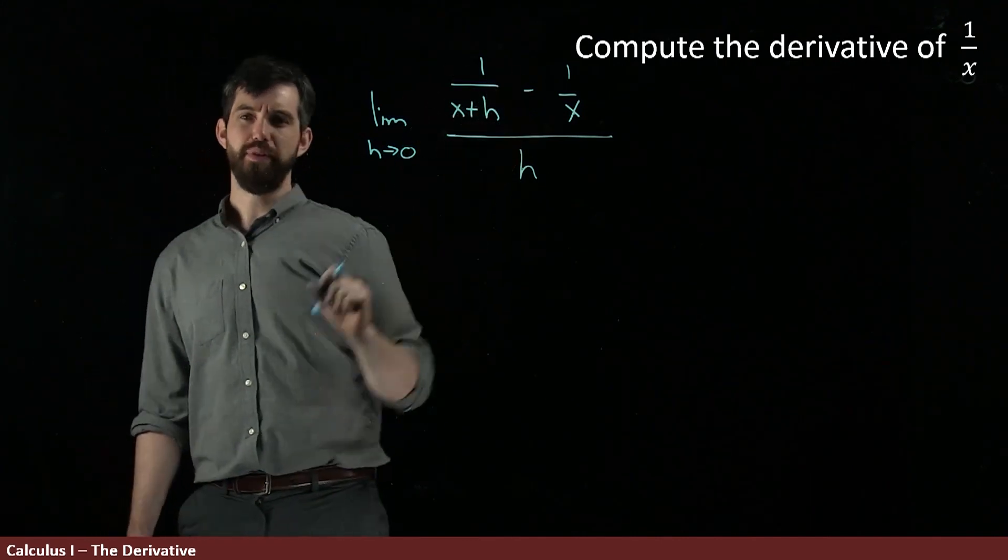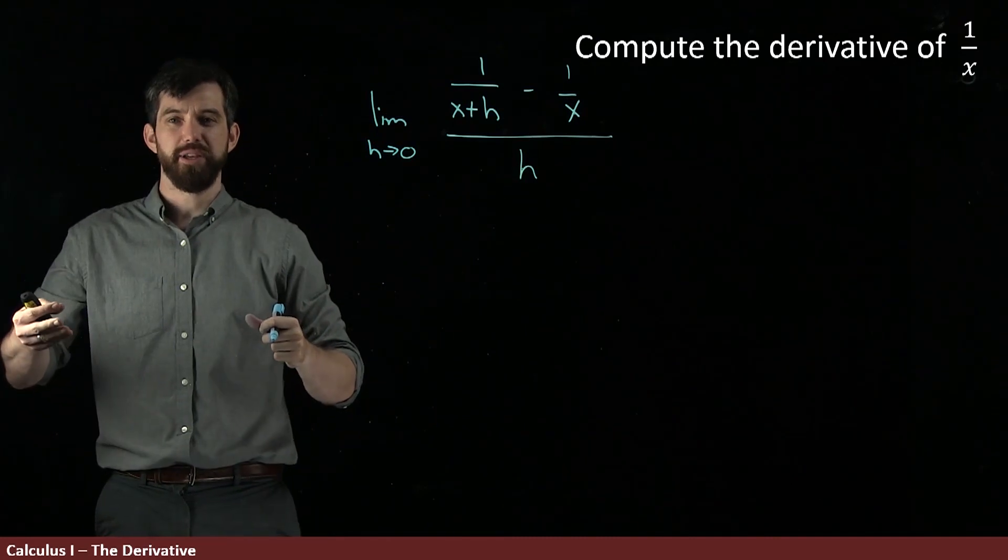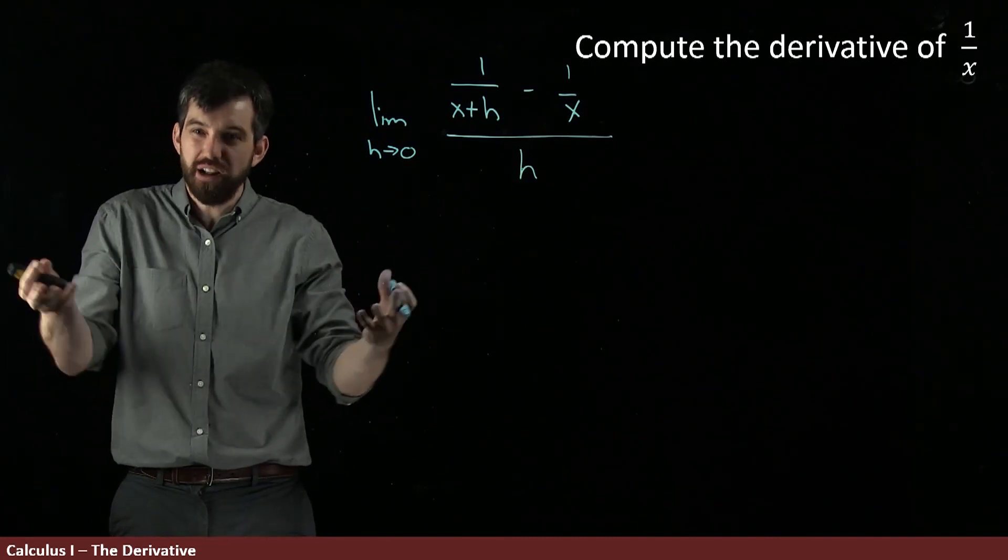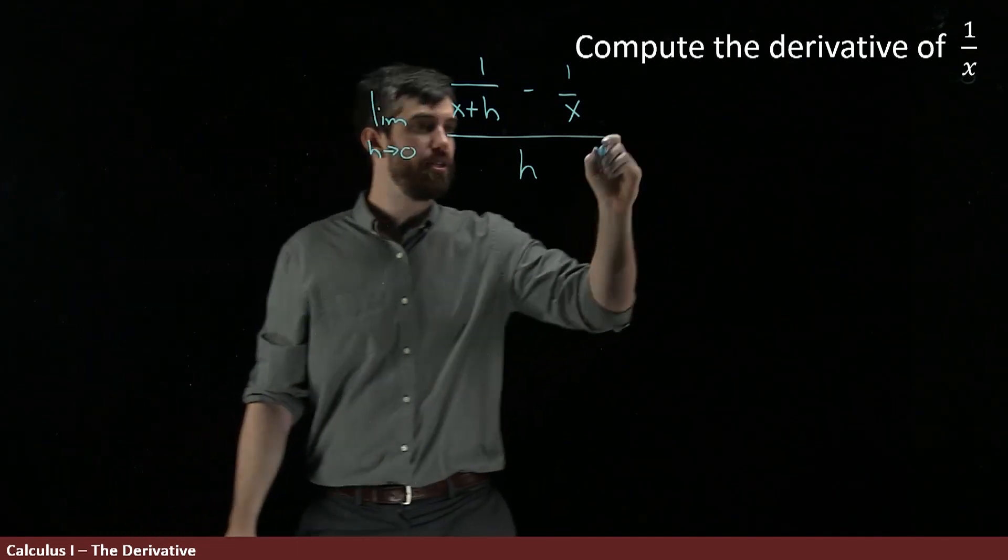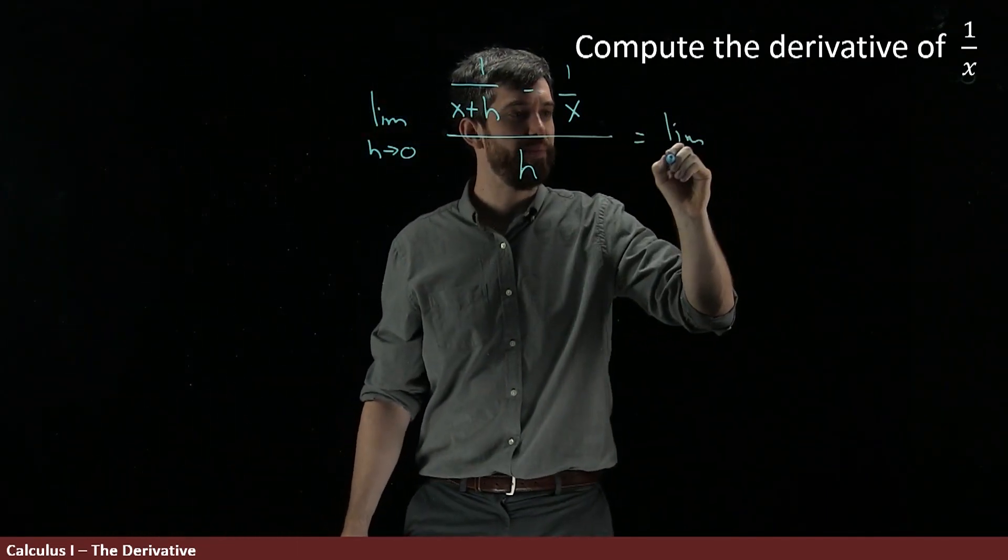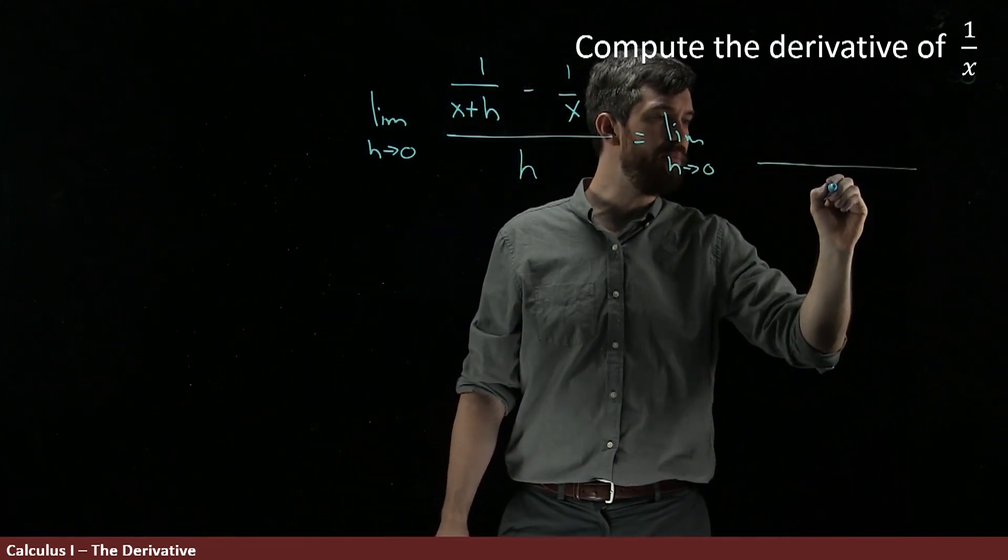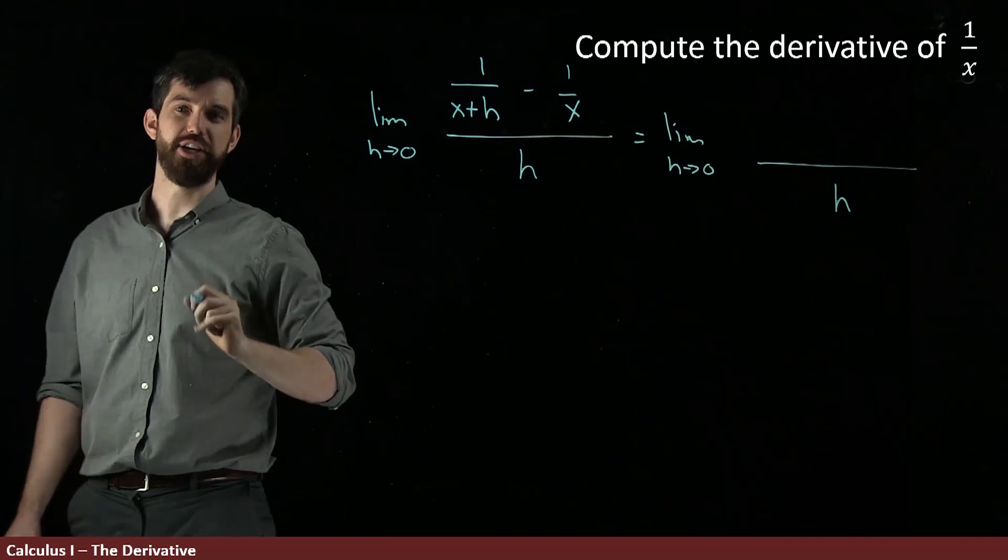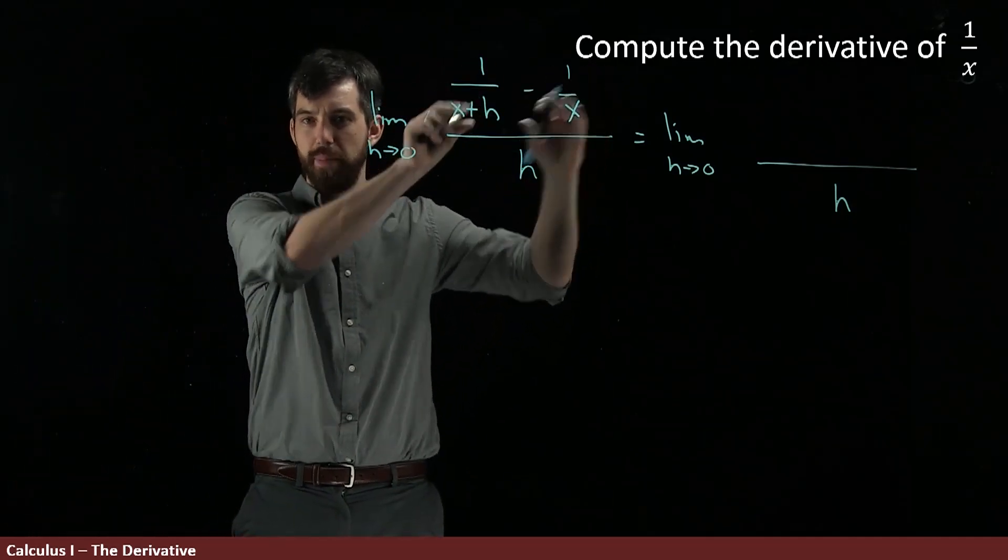Now, this looks like a bit of a messy thing, but any time where you have a difference of fractions, the standard canonical algebraic trick is to find a lowest common denominator. So let's do that. So I'm going to copy and paste the limit part. I'm going to copy and paste the big denominator down here, the divided by h. That's not going to change at this step. But now I'm going to do lowest common denominator to this portion up here.